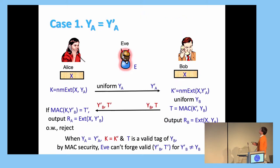So why is this secure? So let's discuss this in two cases. First is if Y'_A equals Y_A, then just because the extractor is a deterministic function, then K' will be equal to K, so Alice and Bob will have the same key on their MAC, and the security is just guaranteed by the MAC.